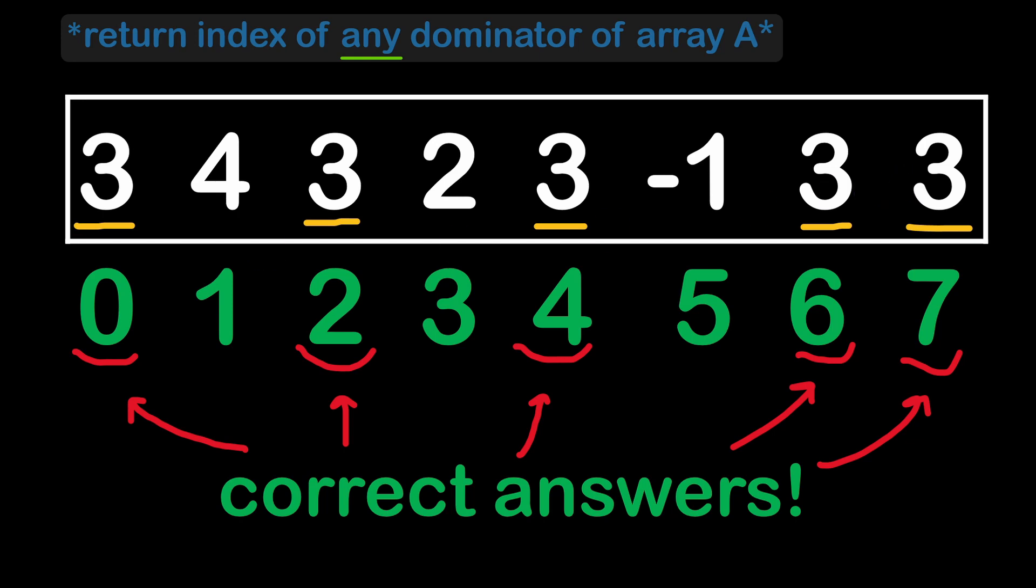We can stop and return a result when the count of an element exceeds half the size of the array. However, you can quickly notice that this method requires reading the array multiple times, therefore we have to look for another method that would be more efficient for the best score.